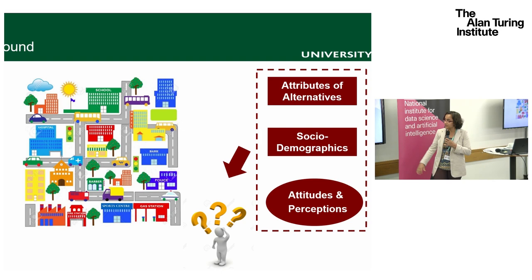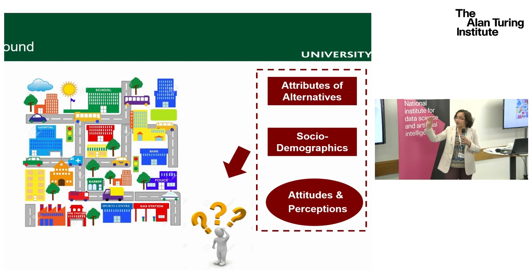The relevant factors also include social demographics such as age, income, and gender, as well as attitudes and perceptions — like how they feel about the environment, for example. Choice modelers establish mathematical relationships capturing how each of these factors contributes to the probability of a traveler choosing a certain option.